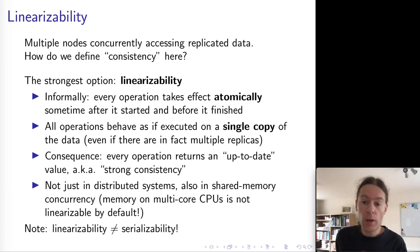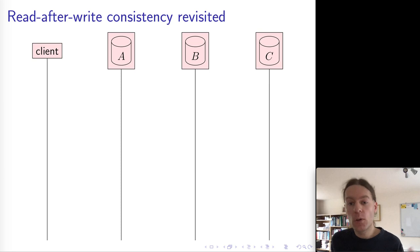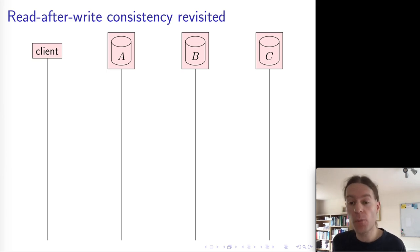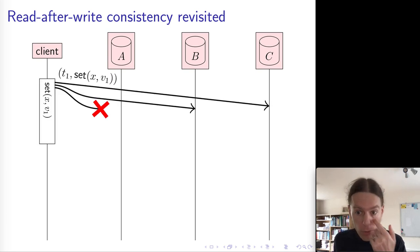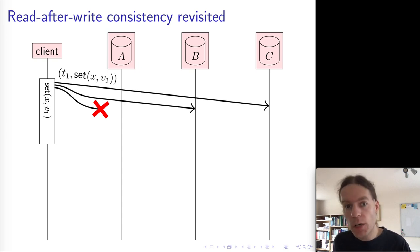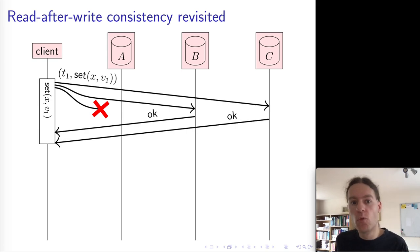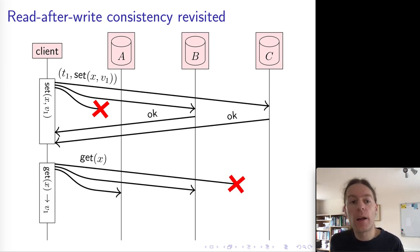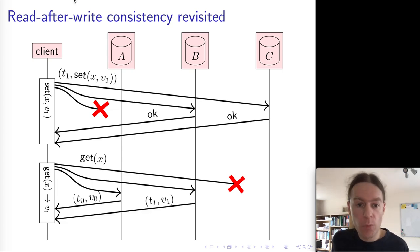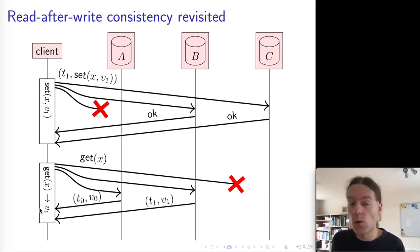To give a sense of what linearizability means, let's go back to read-after-write consistency from a previous lecture, in the context of read and write quorums. If a client wants to write a value v1 to some object x, it makes a write request to a quorum of replicas. If a quorum responds OK, the set request is successful. Subsequently, that same client might make a get request to a quorum of replicas, use timestamps to determine the more recent value, and return that value.